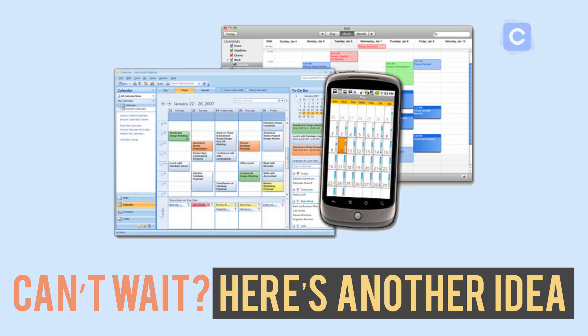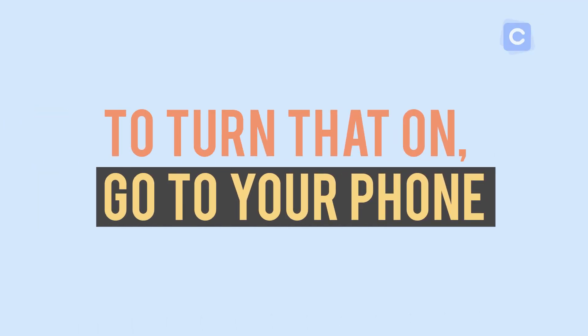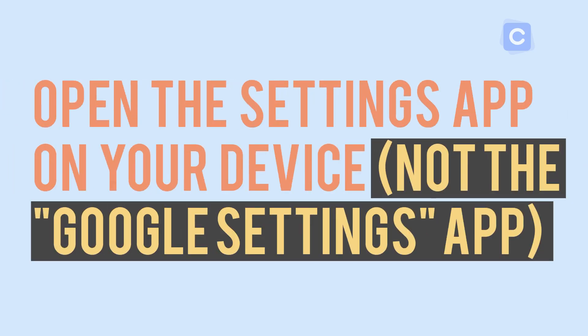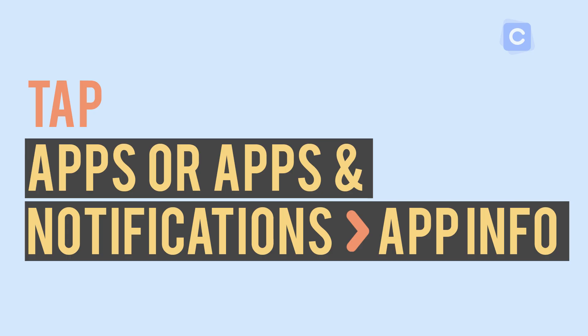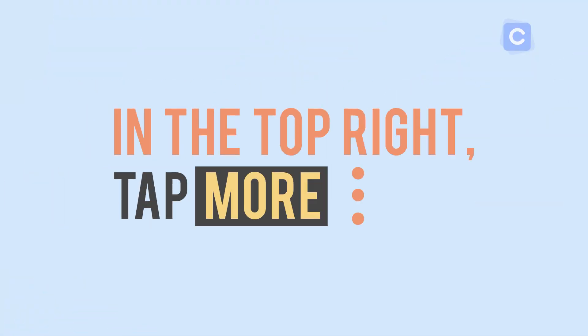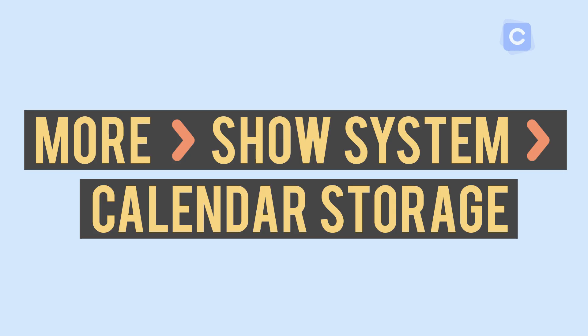If you can't stand the wait, here's something else to check: make sure your calendar is actually turned on. I've found that by accidentally clicking through my phone, I'll have turned it off. To turn it on, go to your Settings app — specifically the Google Settings app. Tap on 'Apps' or 'App and Notifications' (it varies by phone). Scroll to the top right of the phone and click on the three little dots, then click 'Show System,' then find 'Calendar Storage.'